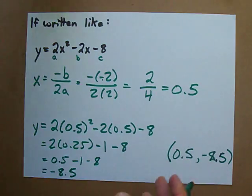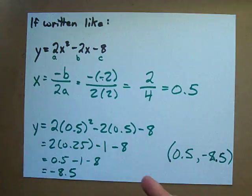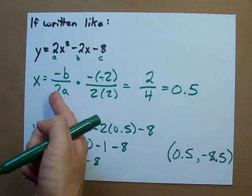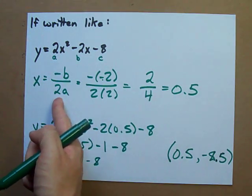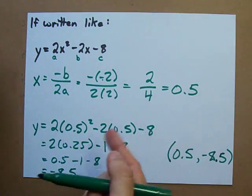A little tougher than just reading it directly off of the function. But, pretty easy. Just remember, negative b over 2a, and then substitute that back into the equation.